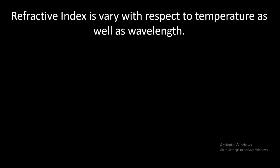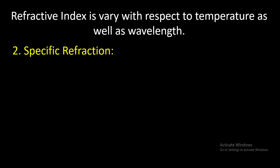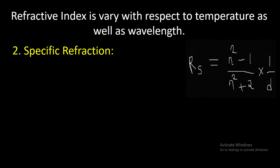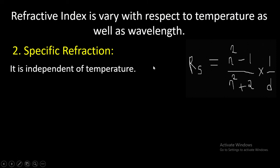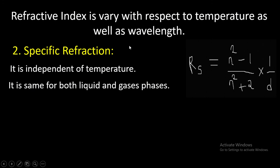The refractive index varies with respect to temperature as well as wavelength, so it is not a very useful concept for study of structure. The next concept is specific refractivity, denoted by rs, equal to (η² − 1)/(η² + 2) × (1/d), where d is density and η is refractive index. It is independent of temperature and therefore more useful compared to refractive index. It is the same for liquid as for the gaseous phase.